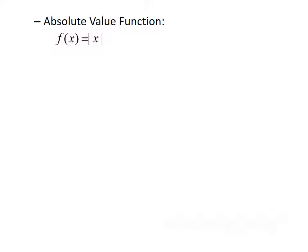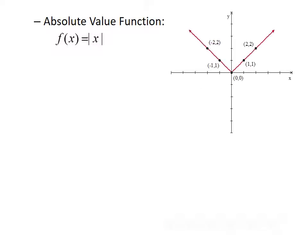And finally, we have the absolute value function, f of x equals the absolute value of x. The absolute value function looks kind of like a v-shape, where each point on the graph has x and then the positive value of x, or the absolute value of x, as its y component.